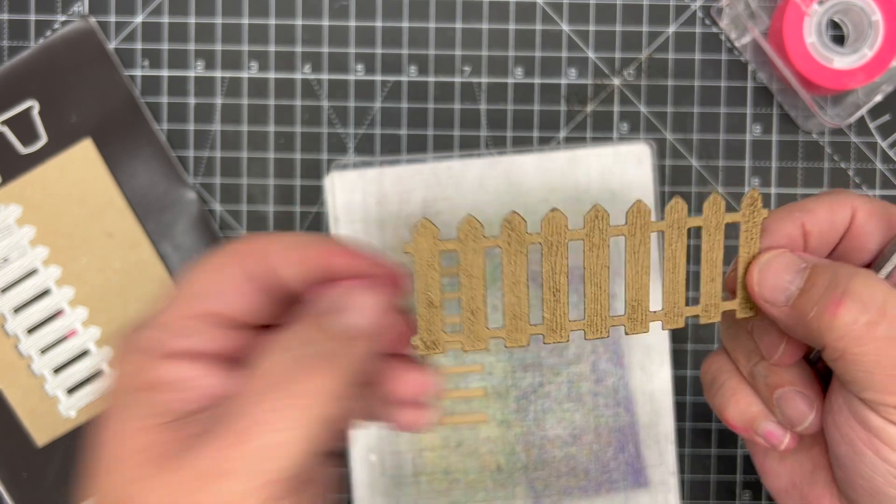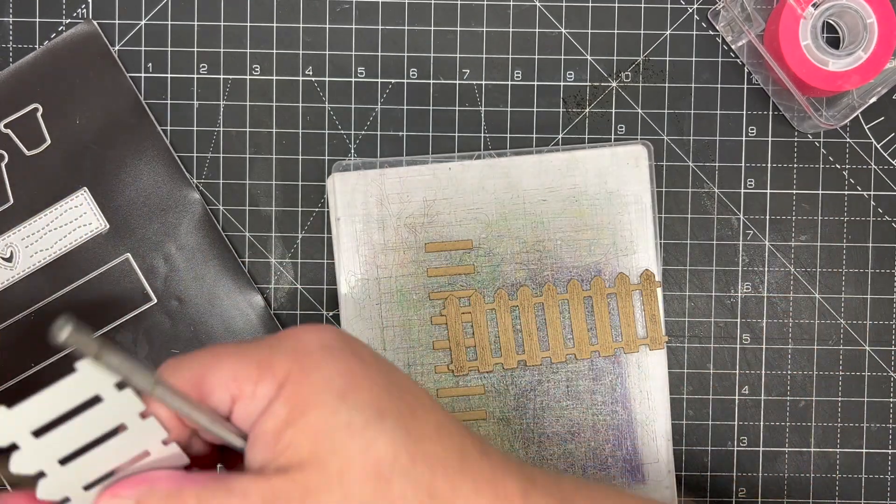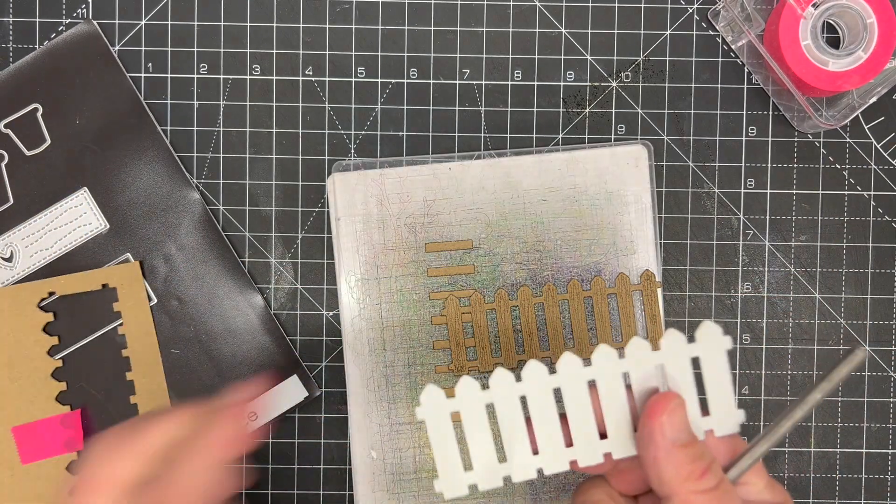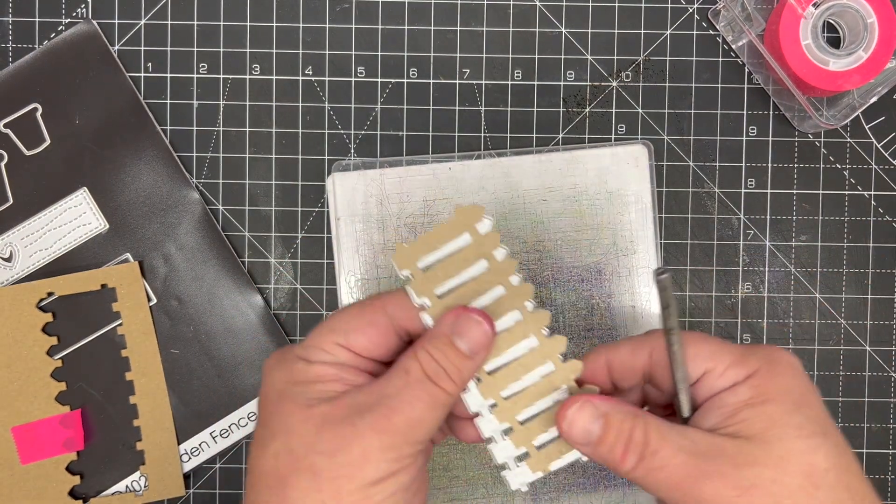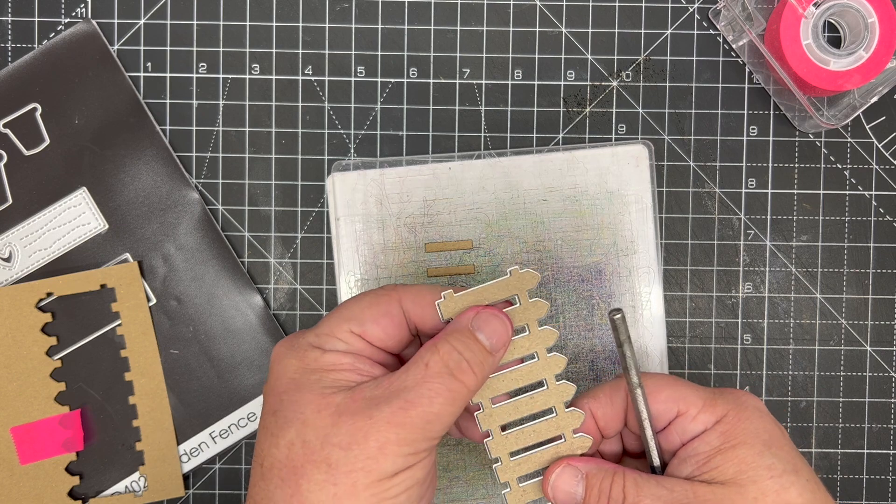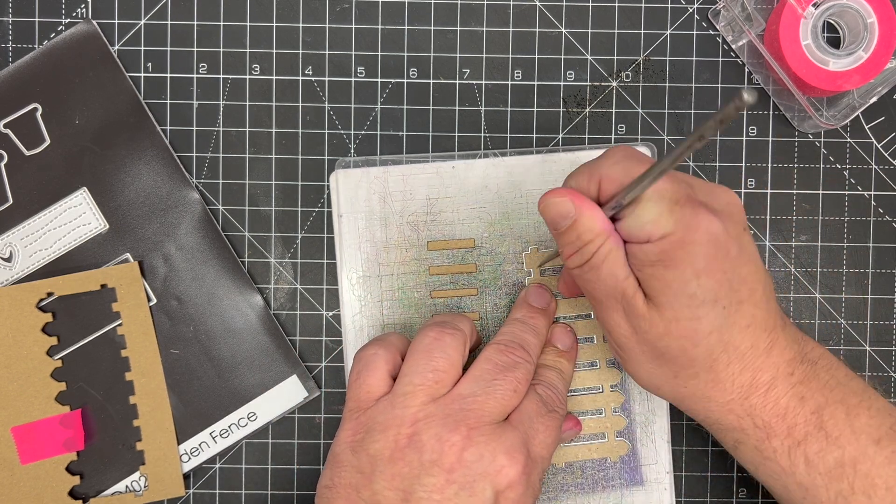Now one thing to note on this die is there are no release holes in here, so sometimes with your die you may need to maybe leave it in place and you may need to just dig into the corner.